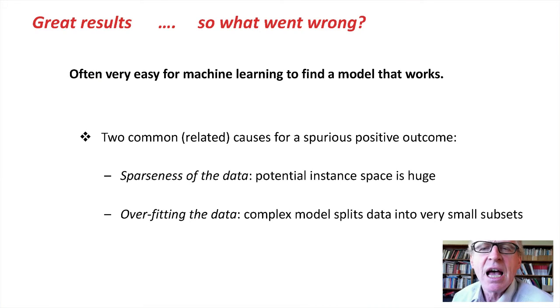Well, let me give you an example. Machine learning algorithms are trying their best to get predictive accuracy. And it's often very easy for learning algorithms to find some model that will work. And there are two reasons why we might get good performance for the wrong reasons. And one is sparseness of data, and another is overfitting the data. So let's look at each of these problems and see if we can figure out what's going on with our example here.